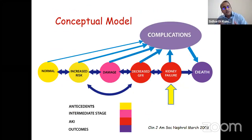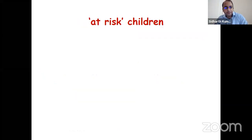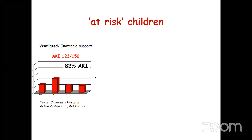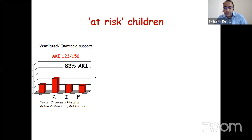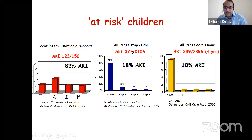The problem with AKI worldwide is we tend to diagnose it once a patient goes into kidney failure. We should be diagnosing it in at-risk children and acting early. Children on ventilators or inotropes are especially at risk—one study from Texas Children's showed AKI in almost 82% of ventilated children on inotropes. Studies from Montreal and Los Angeles showed AKI in 18% and 10% of all pediatric ICU admissions respectively. The sicker the child, the higher the incidence of AKI.